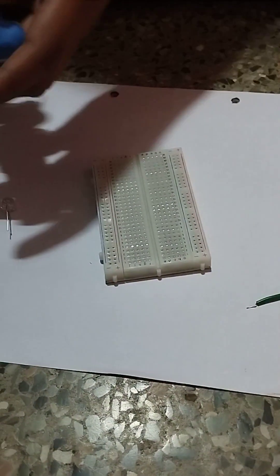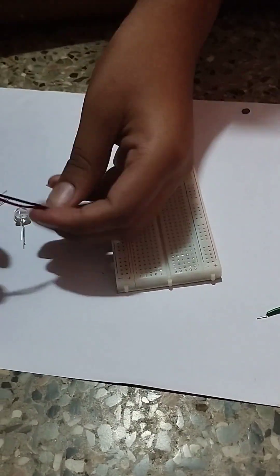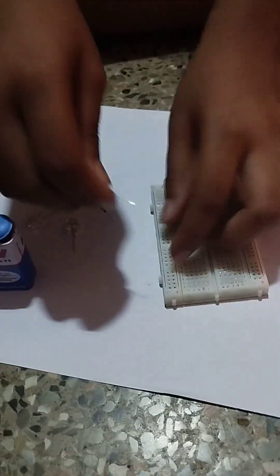Next take the breadboard. You can see positive and negative over here, plus and minus. This red wire is the positive and black is the negative. So I am inserting the red in the positive and black in the negative.